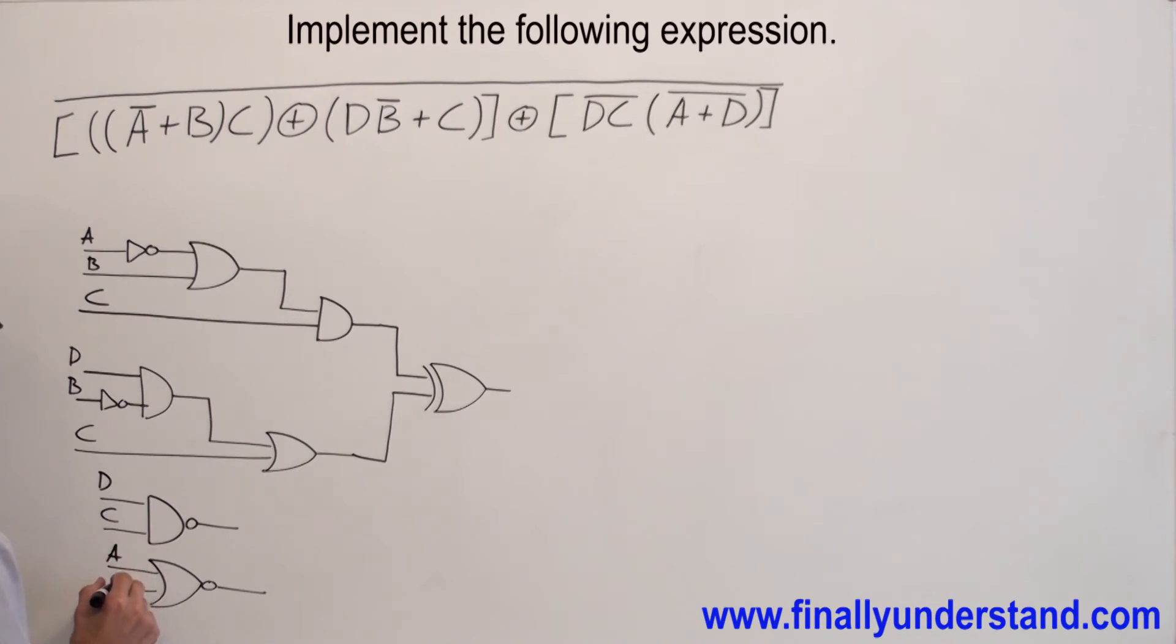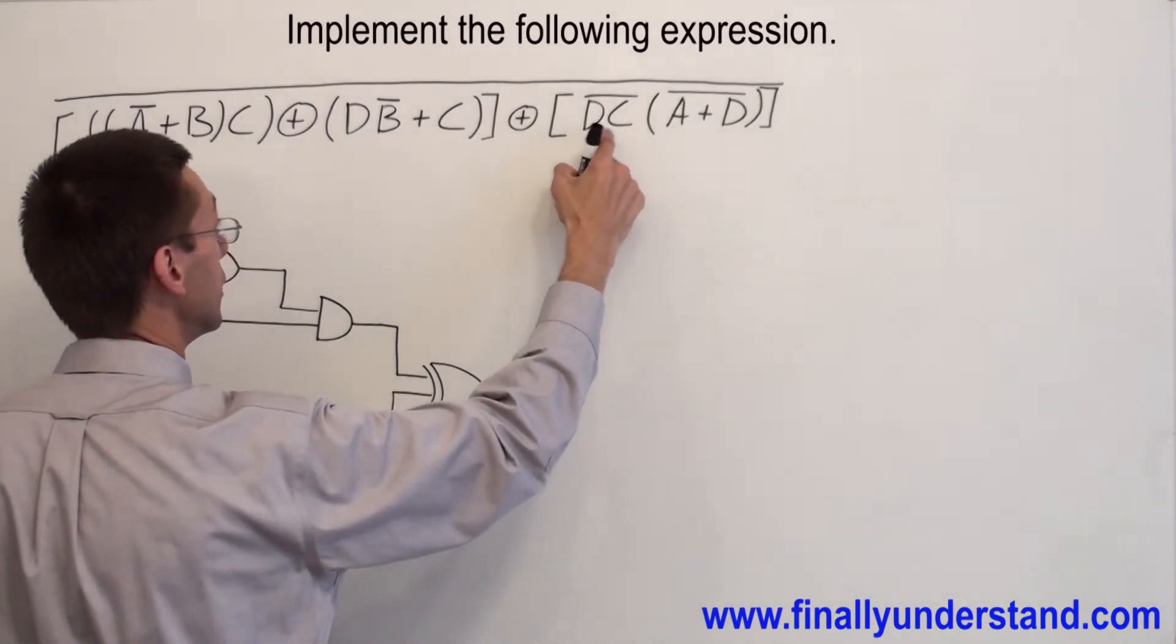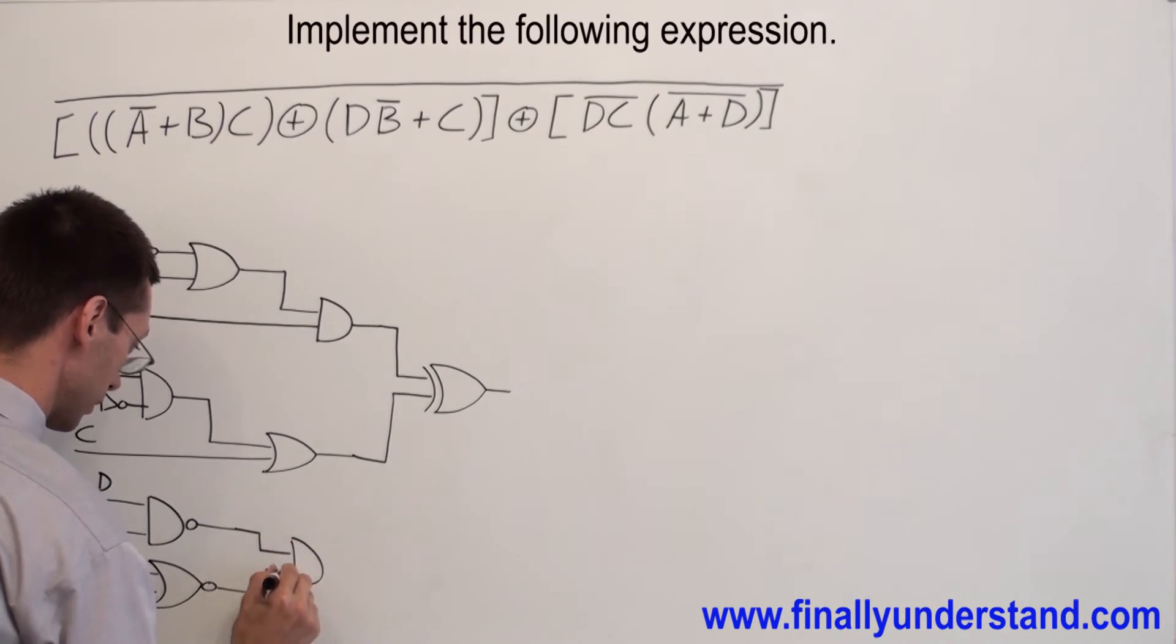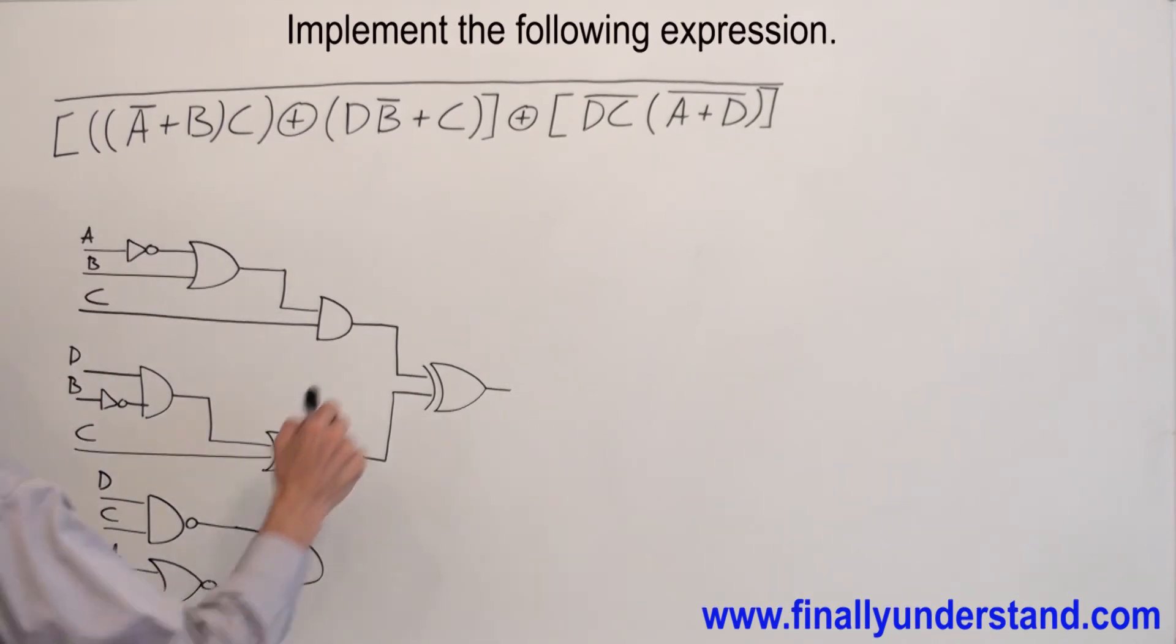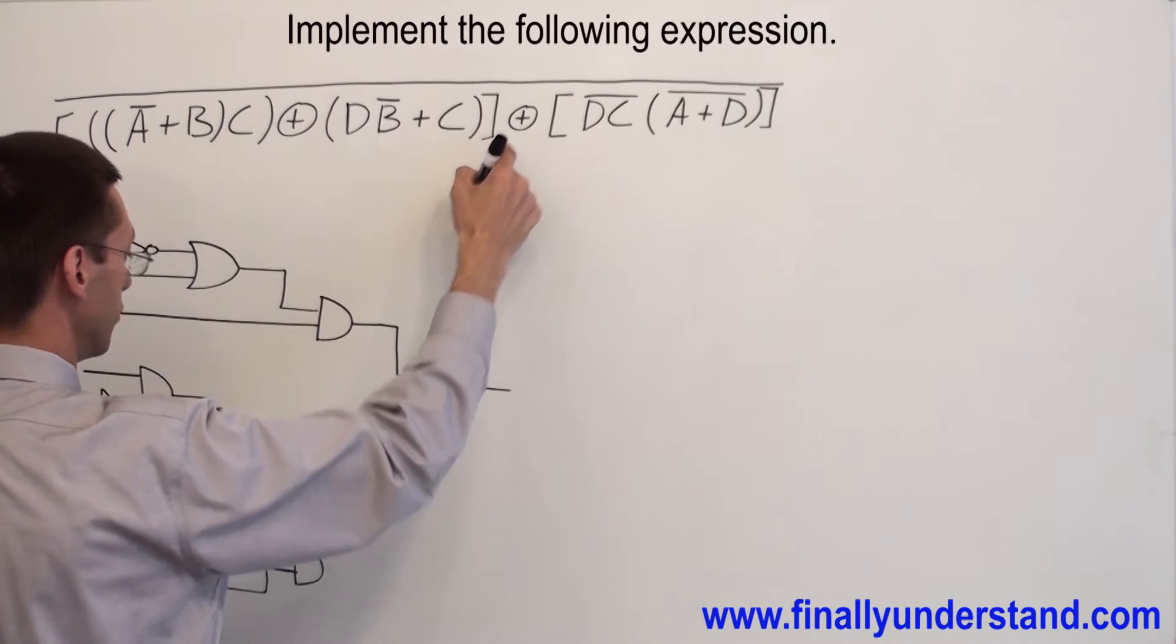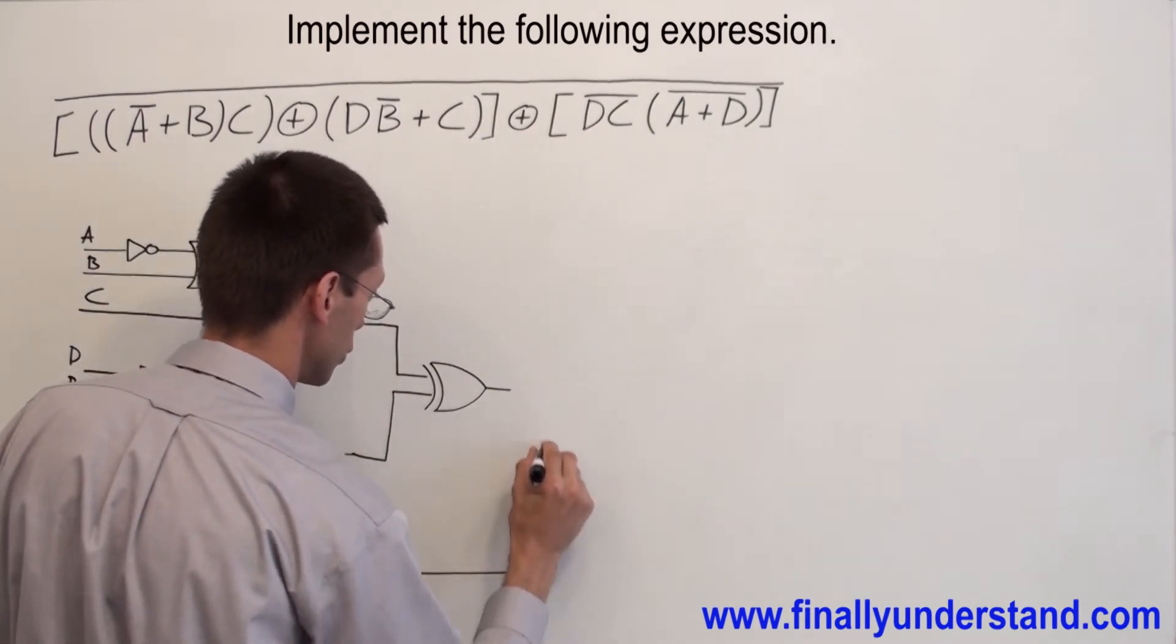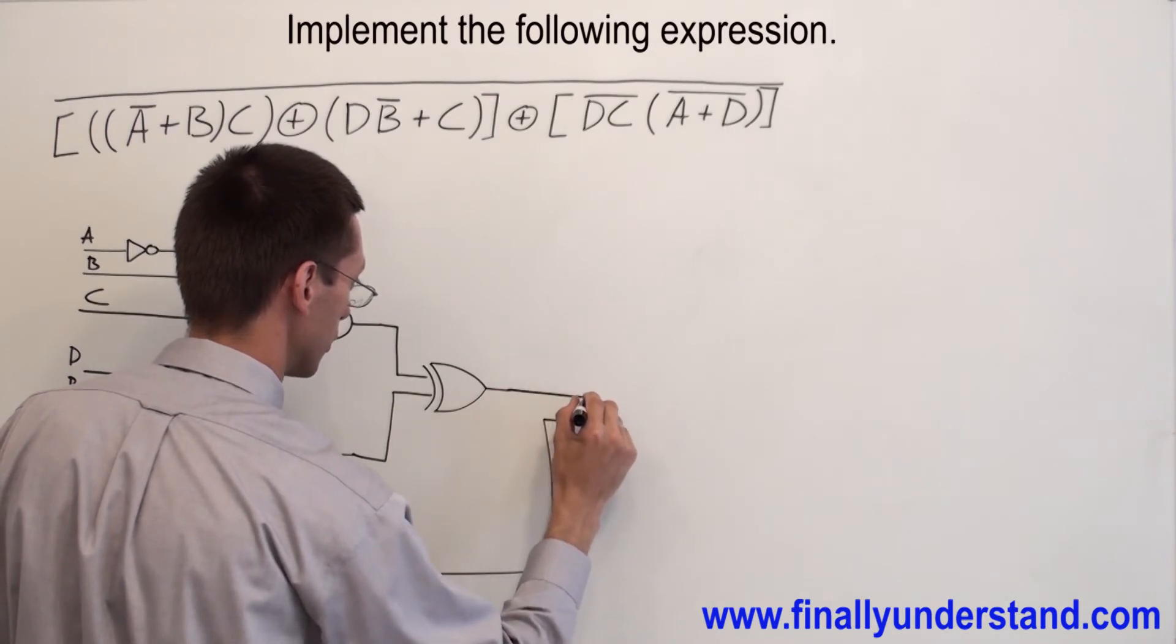A, D is ANDed with NAND gate, the NAND gate. And as we said before, the very last gate in the circuit is going to be exclusive NOR.